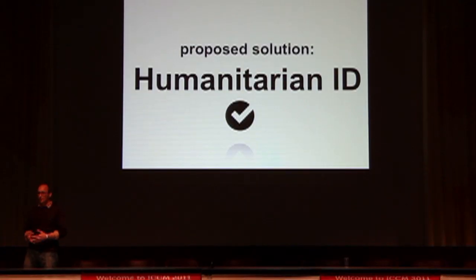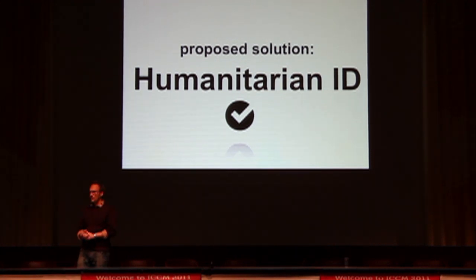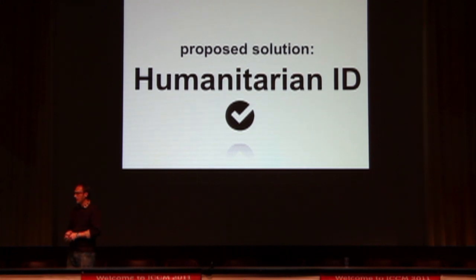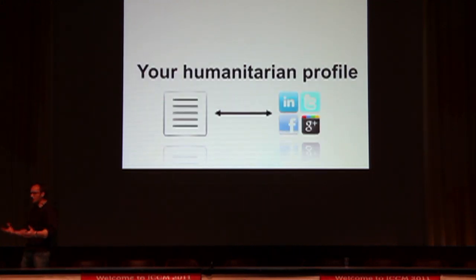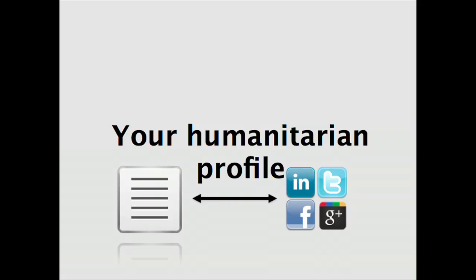Our solution that we're suggesting is a humanitarian ID — a check-in, check-out type solution. Not Foursquare as you know it, but really checking into the emergency. We imagine you would have some kind of humanitarian profile. We want to connect this to other social networks — we don't want to create a whole new profile that you have to manage. We want to make this as integrated as possible and not cause another headache.